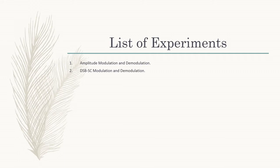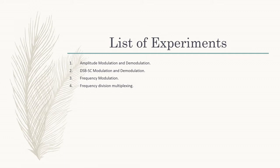Here DSBSC means Double Sideband Suppressed Carrier. The third experiment is design and verification of frequency modulation. The fourth experiment is design and verification of frequency division multiplexing. The fifth experiment is design and verification of PAM, PWM, and PPM.